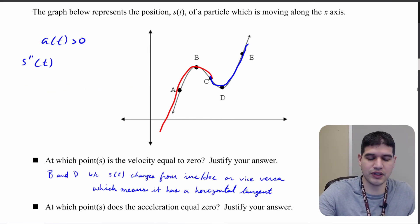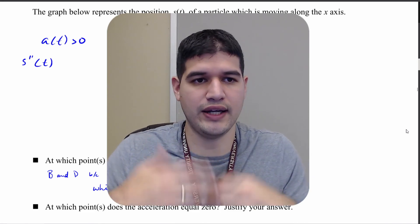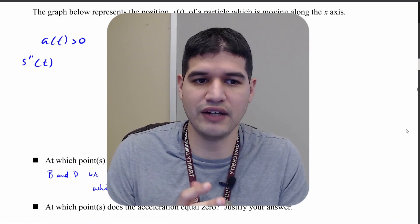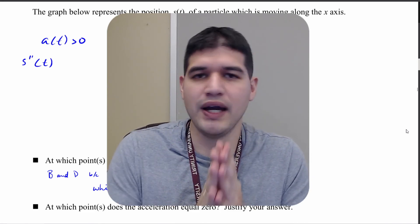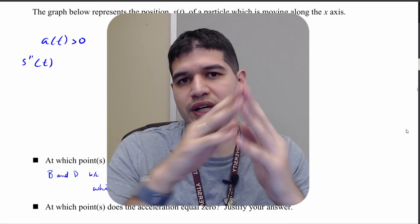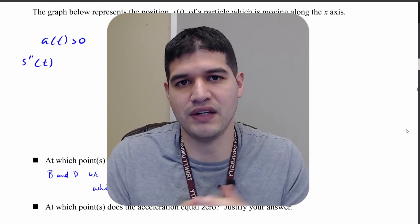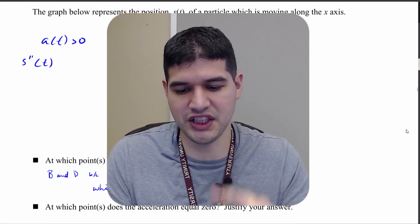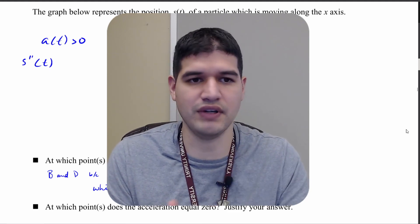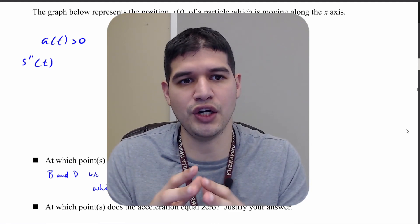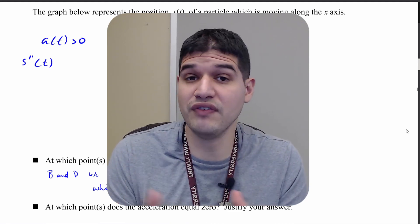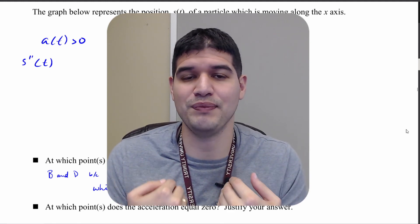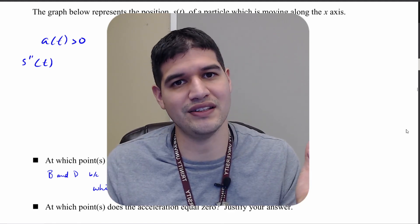That concludes our answers for this graph. You might want to review the connections between f, f prime, and f double prime — really just think about how the language changes from position to velocity to acceleration and you're good to go. If you have any additional questions, please reach out. I'm Mr. Hernandez, and this was Mr. Hernandez Teaches.